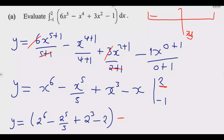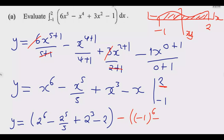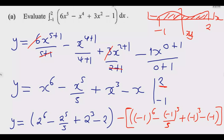This is the area under the curve between these bounds. Now substituting x = negative 1: negative 1 to the power 6, minus negative 1 to the power 5 over 5, plus negative 1 to the power 3, minus negative 1. We simplify this and subtract it from the first part.